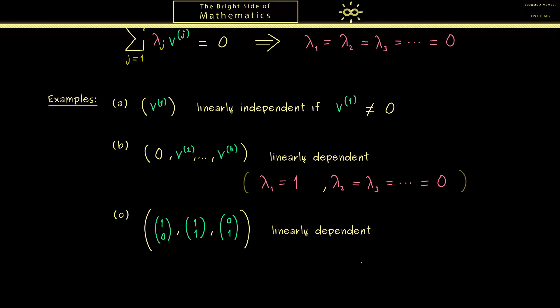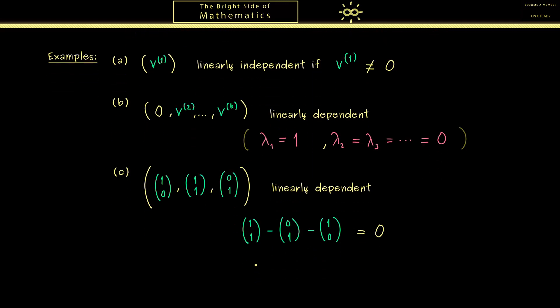And now the claim is that all the three vectors together in one family are linearly dependent. To show that you have to give a non-trivial linear combination for the zero vector. Indeed here it's not so hard, because we can just take the vector (1,1), then subtract the other one (0,1), and the other one (1,0). Hence we have scaling factors 1, minus 1, and minus 1. In fact here you can already see that such a linear combination with three vectors in R^2 should always be possible.